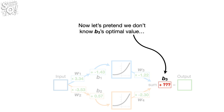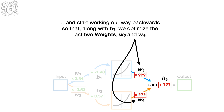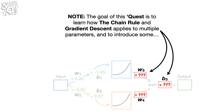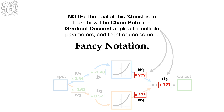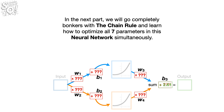Now let's pretend we don't know B sub 3's optimal value and start working our way backwards so that, along with B sub 3, we optimize the last two weights, W sub 3 and W sub 4. The goal of this quest is to learn how the chain rule and gradient descent applies to multiple parameters and to introduce some fancy notation. In the next part, we'll go completely bonkers with the chain rule and learn how to optimize all seven parameters in this neural network simultaneously.